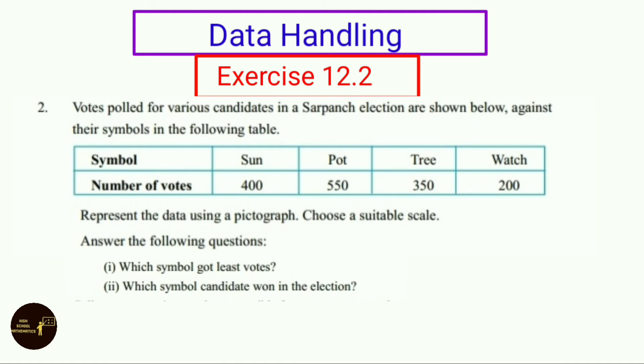Now let us see the second sum. Votes polled for various candidates in a Sarpanch election are shown below against their symbols in the following table. Represent the data using a pictograph. Choose a suitable scale.